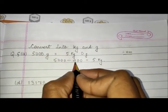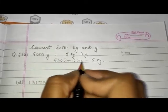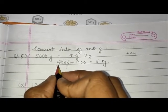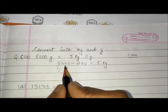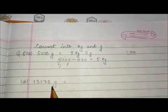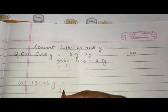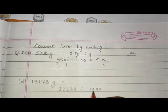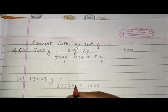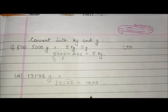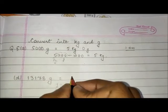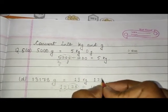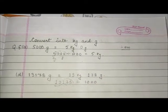There is a short trick also. In 1000 there are 3 zeros, so we remove the last three digits of the number — those will be in grams, and the leftover numbers will be in kilograms. So 5 kilograms and 0 grams is the answer. Similarly, 13,178 divided by 1000 — we remove the last three digits. The leftover number is 13, so 13 will be in kilograms, and the removed number 178 will be in grams. So the answer is 13 kg 178 g.